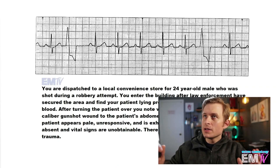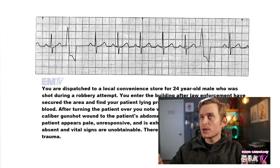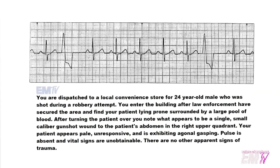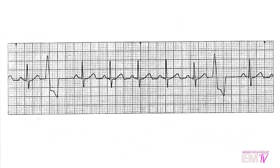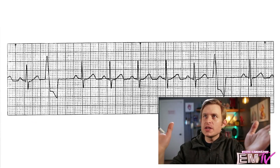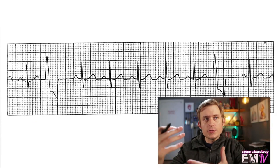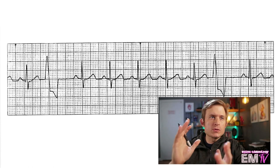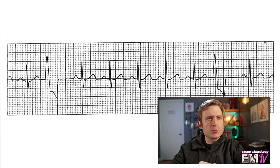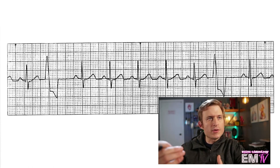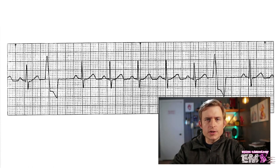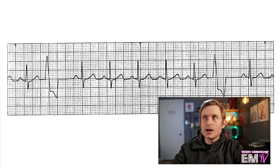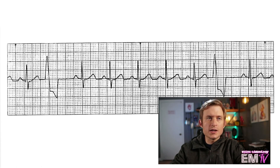Jumping right into this card, let's go ahead and take a look at that rhythm to see if we can identify it. First thing I like to do is calculate a rate. Based on what I'm seeing here, I'm going to just count the R waves. I know there are two kind of weird looking complexes present, but I will count them because they do have R waves when I'm calculating this heart rate. Including those two wider complexes, I'm getting nine R waves, so the heart rate here would be 90.